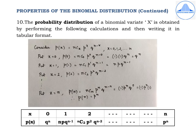The tenth property discusses the probability distribution of a binomial variate x. A probability distribution is a table with x values in one row and corresponding probabilities in the second row. We substitute x = 0, 1, 2 up to n into the PMF P(x) = nCx · P^x · Q^(n−x) to obtain each probability.